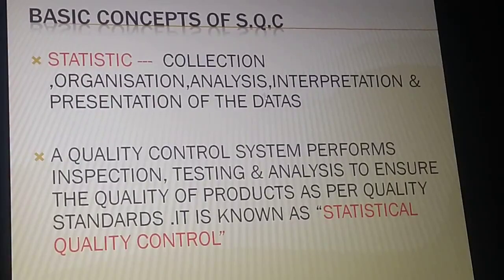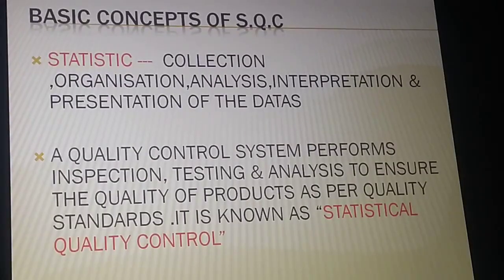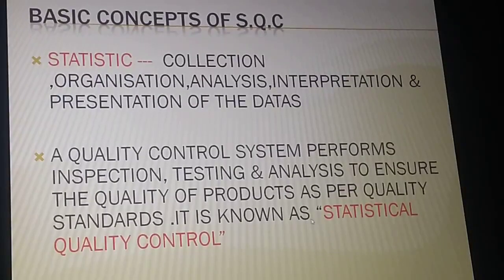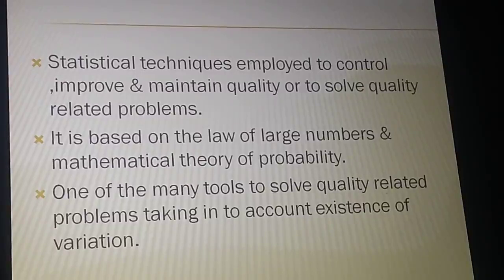First you collect, then organize, then analyze, then interpret and present the data — this is collectively known as statistics. A quality control system which performs inspection, testing, and analysis to ensure the quality of products as per quality standards is known as statistical quality control, or SQC. Statistical quality control checks whether the quality of products meets the quality standard, and statistical techniques are employed to control, improve, and maintain quality or to solve quality-related problems.